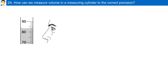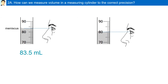How can we measure volume in a measuring cylinder to the correct precision? When measuring liquids, we must read the meniscus — that is the bottom curve of the liquid in a measuring cylinder. In this example, the volume of the liquid is between 83 milliliters and 84 milliliters. We know for a fact it is 83 milliliters and we can estimate one beyond that as 83.5 milliliters. In the second example, the meniscus is exactly at 80 milliliters. However, this measuring cylinder can measure to the tenth place, therefore our answer must be reported as 80.0 milliliters.